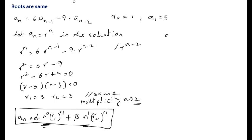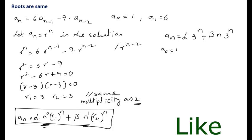Since n⁰ = 1, the solution simplifies to aₙ = α·3ⁿ + β·n·3ⁿ. Applying the initial condition a₀ = 1, we substitute n = 0: a₀ = α·3⁰ + β·0·3⁰.